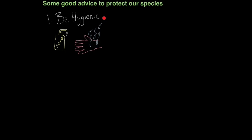Pathogens undoubtedly threaten our species more than any other living organism on this planet. So here's some good advice to protect our species. Firstly, be hygienic — always wash your hands after going to the toilet, before cooking a meal, before shaking hands with someone. At every opportunity, be hygienic. Use soaps which contain antiseptics. It's the easiest way to stop us transmitting disease.